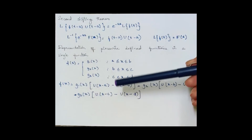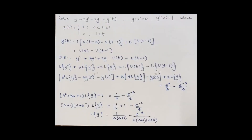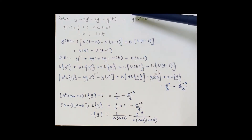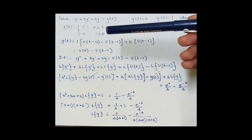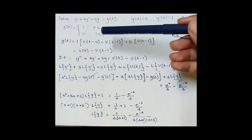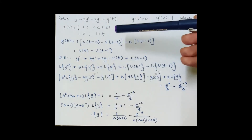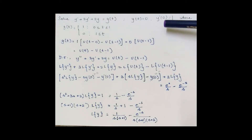These are piecewise functions for different limits converted into a single function. Now let's solve this question: y'' + 3y' + 2y = g(t), where g(t) = 1 when t ranges from 0 to 1, and 0 for all values where t ≥ 1. The initial conditions are y(0) = 0 and y'(0) = 1.